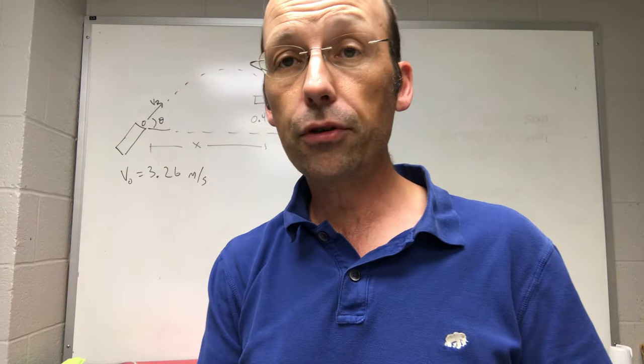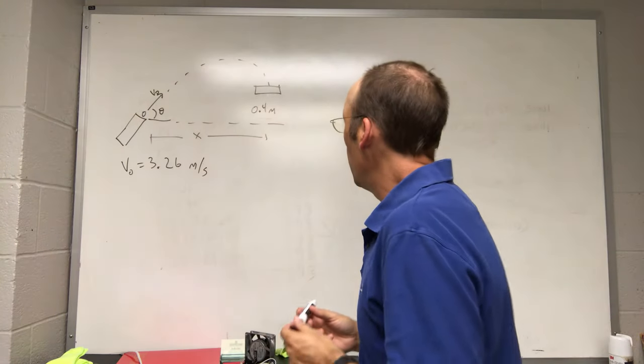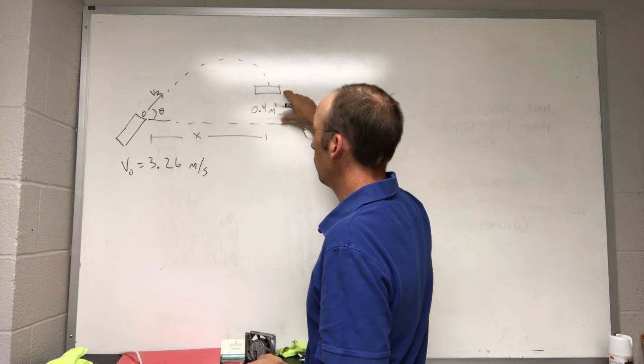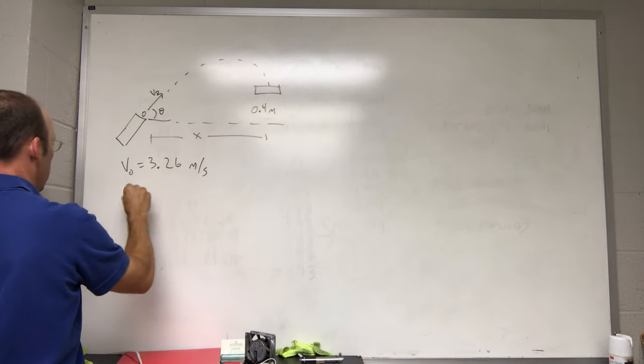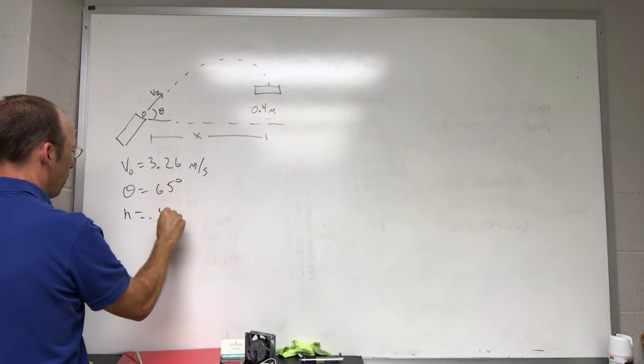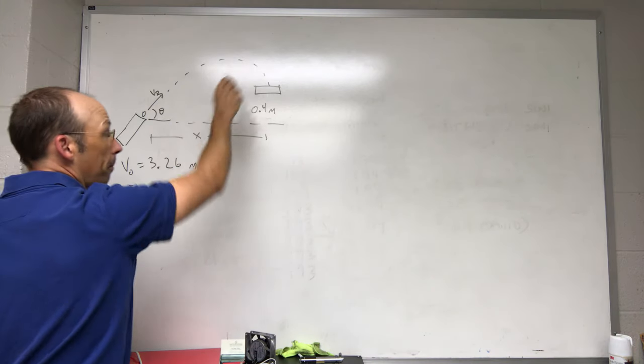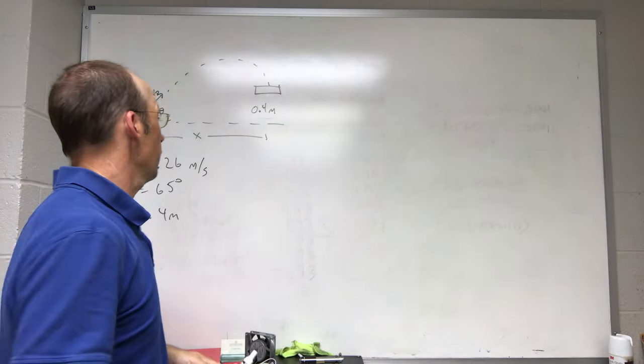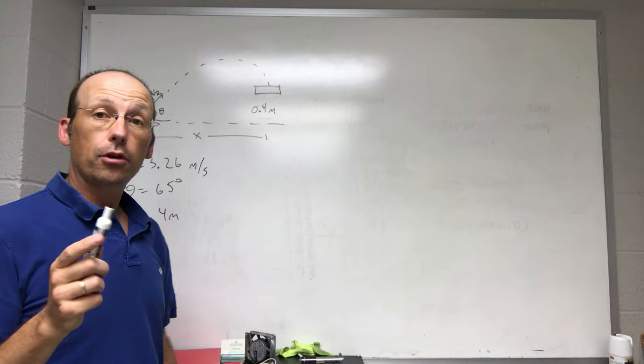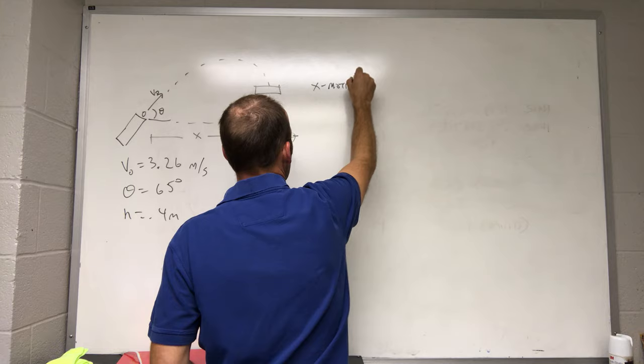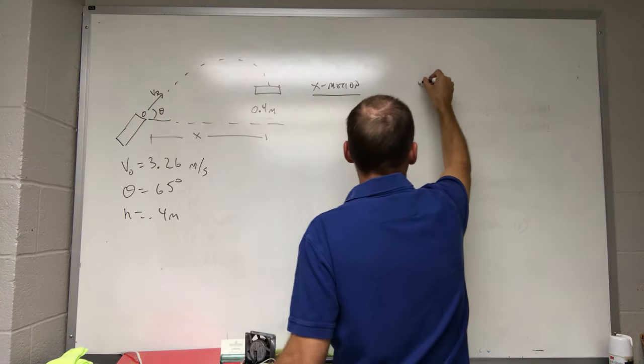Okay, so remember in projectile motion, I've already picked the angle theta is 65 degrees, h is 0.4 meters. That's the height of the basketball goal above the launching point. I just picked a number. So remember in projectile motion we have two problems: we have the x motion and then we have the y motion.